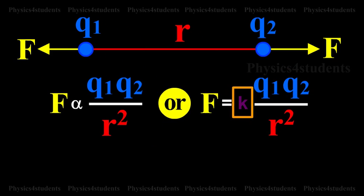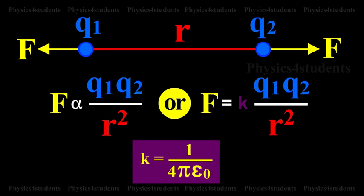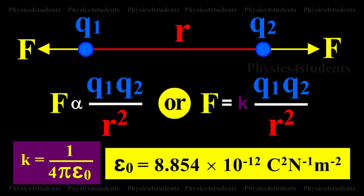Where K is a constant of proportionality. In air or vacuum, K is equal to 1 by 4 pi epsilon 0, where epsilon 0 is the permittivity of free space, that is vacuum, and the value of epsilon 0 is given as follows.